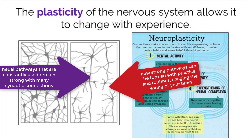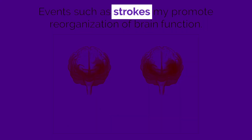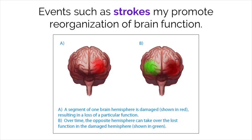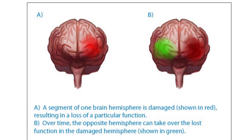A stroke is described as the sudden death of brain cells in a specific area. This usually occurs when blood flow is stopped or blocked to that part of the brain. This image shows an area where brain cells were damaged due to a stroke. But as we learned, neuroplasticity can build new neural connections if parts of the brain are damaged.